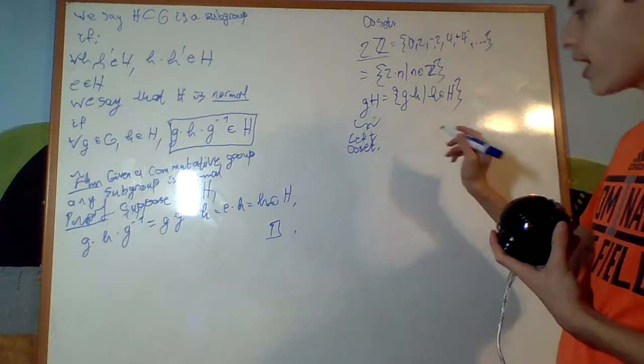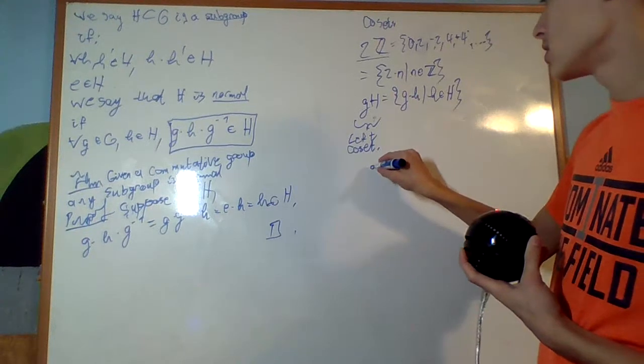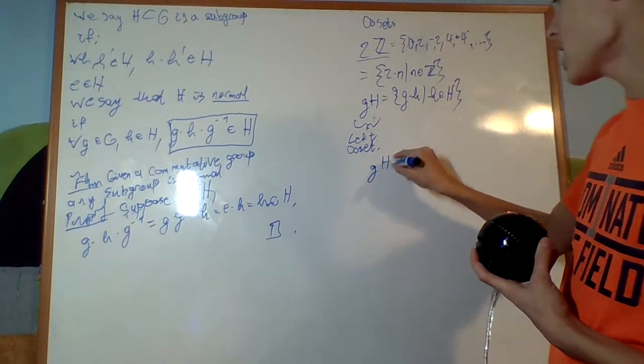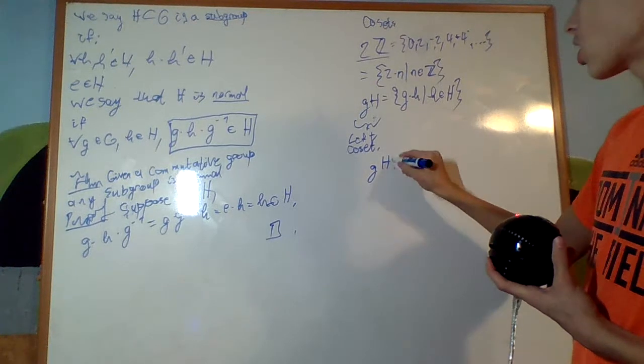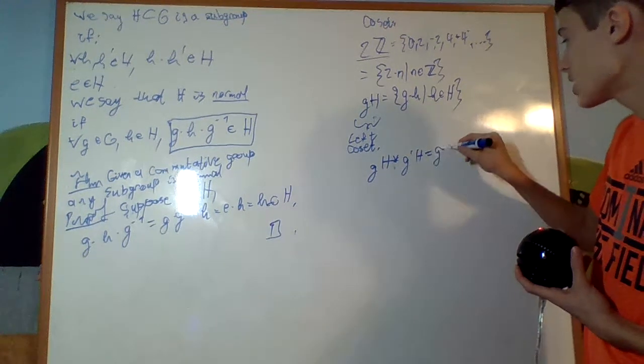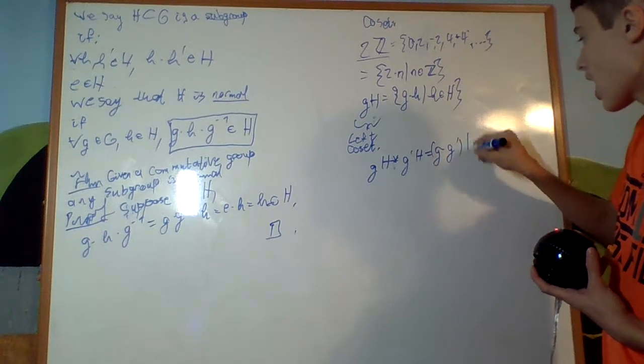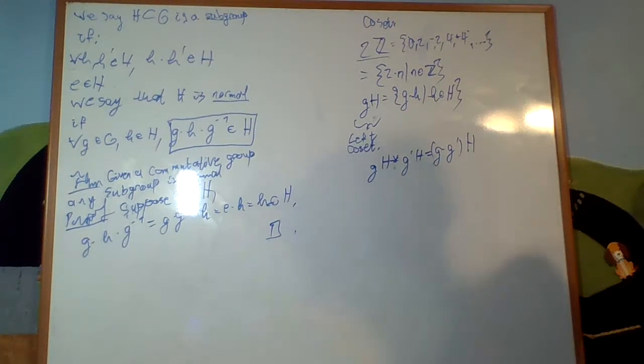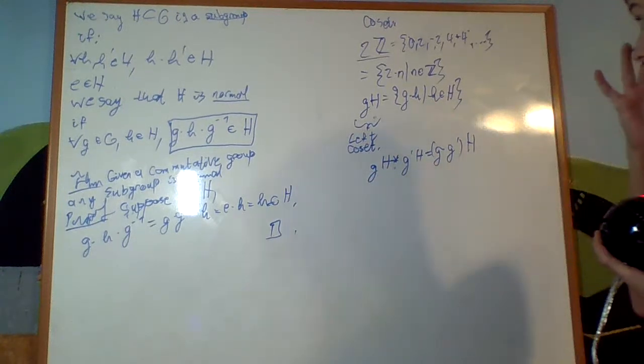So, how about we just define a multiplication? GH times, I'll denote it as star, G prime H is just G times G prime H. Right? We can define that multiplication but, there's a problem.